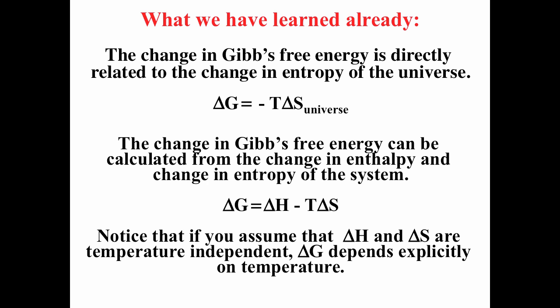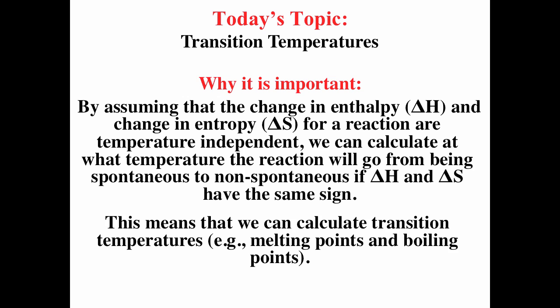Notice from ΔG = ΔH − T·ΔS that if you assume ΔH and ΔS are temperature independent, then ΔG depends explicitly on temperature. Under small temperature ranges you can assume ΔH and ΔS are temperature independent, but that's not a good approximation for large changes in temperature. Today we'll talk about transition temperatures: by assuming ΔH and ΔS of the system are temperature independent, we can calculate the transition temperature — the temperature at which a reaction goes from spontaneous to non-spontaneous. When ΔH and ΔS have the same sign, whether or not the reaction is spontaneous depends on temperature.